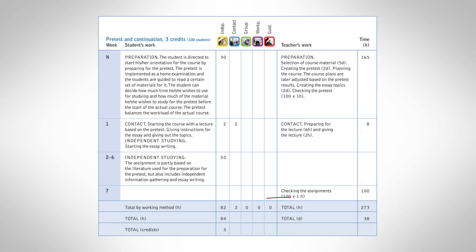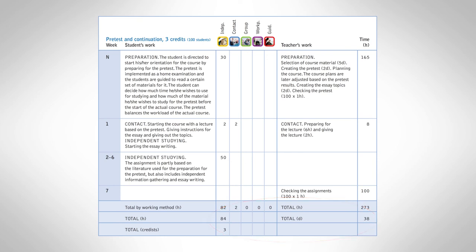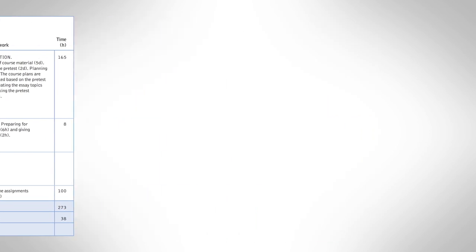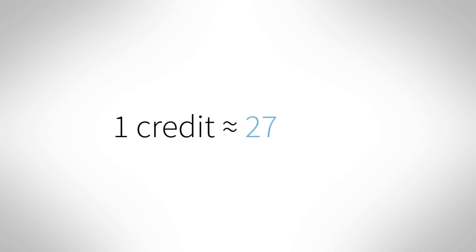And do the same thing for your own teaching and assessment tasks. Finally, calculate the total workload for both the students and yourself. To check the appropriateness of the course workload, convert the student hours to study credits. In the ECTS system, one credit is worth 27 hours.